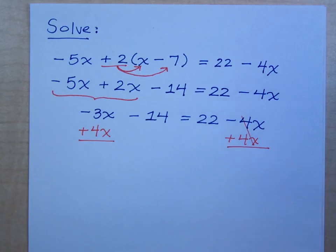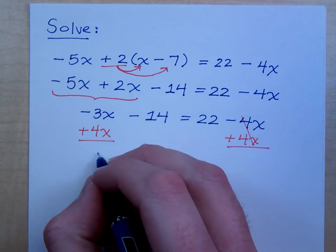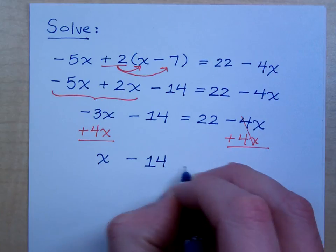That gives me 0, and that's what I was trying to do. I was trying to move that whole term. So, let's rewrite what I have now. What's negative 3x plus 4x? It's a positive 1x. I still have the minus 14, and I still have my 22.